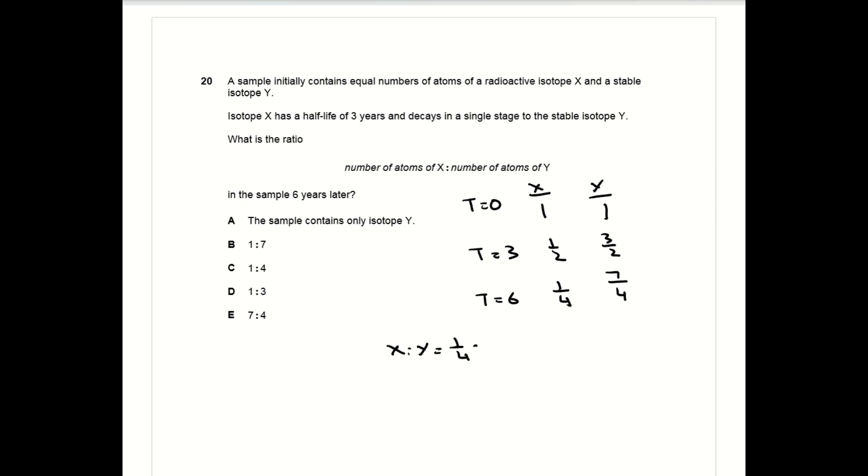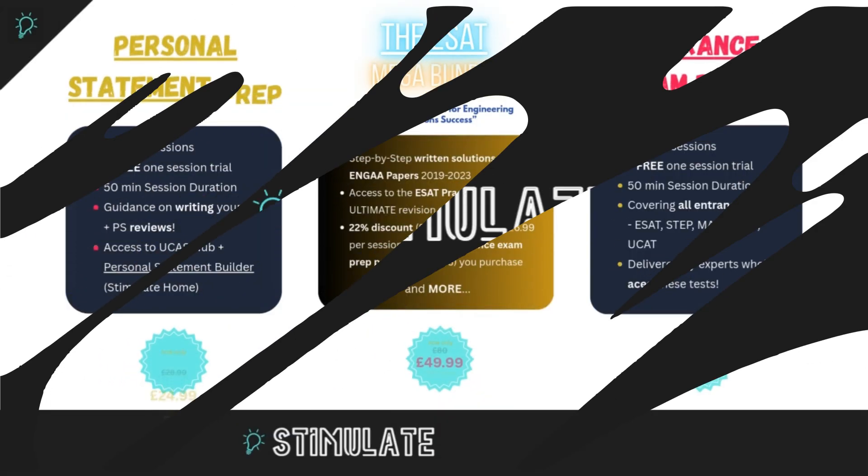After another half-life, x halves again, goes to a quarter, and that quarter of x that has decayed turns into y, so y goes from three over two to seven over four. So the ratio of x to y is one over four is to seven over four, which is one is to seven.